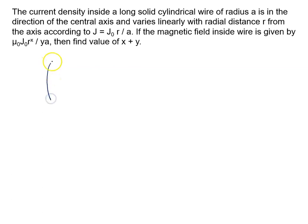Suppose I say this is a cylindrical wire and radius of this wire is given small a. This is the radius. Now current density is along the central axis and varies linearly with radial distance r from the axis.